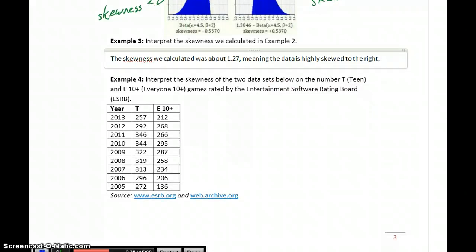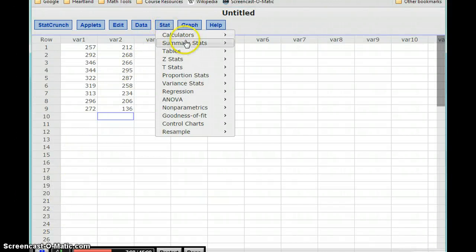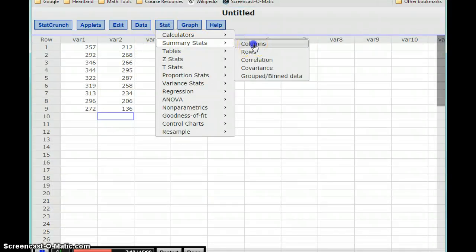We'll take a look at one last example. In this case, we have two different data sets that we want to consider. We're going to compare the skewness of these two distributions and provide interpretations for both of those results. So in this data set, we have the number of video games each year that were rated T for Teen or E 10+, by the ESRB, the Entertainment Software Rating Board. So I already have these values typed into StatCrunch. We can again go to Stat, Summary Stats, and then Columns.